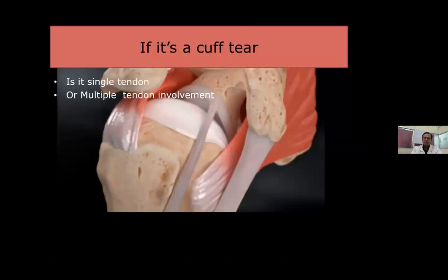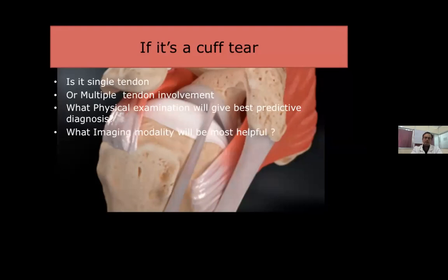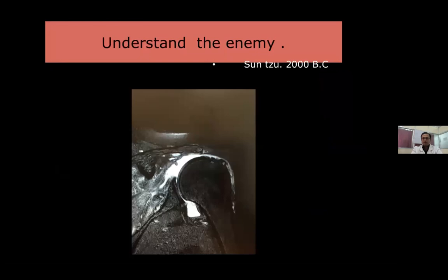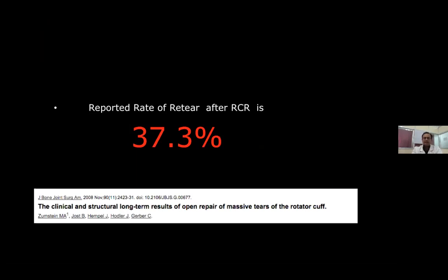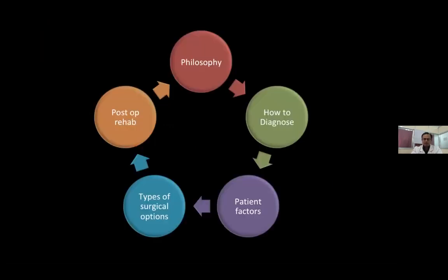If it is a cuff tear, we need to ask: is it a single tendon tear or are multiple tendons involved? What physical examination gives the best predictive value? What imaging modality will be most helpful? As Sun Tzu said 2000 years ago, we need to understand our enemy. The reported re-tear rate after rotator cuff repair is 37.3%, which is quite significant. We need to be very meticulous in planning diagnosis and treatment.